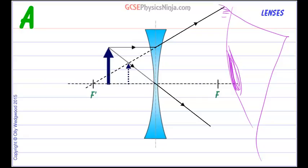And so we see a virtual image formed. It's not really there - it cannot be projected onto a screen and it's on the same side as the object.